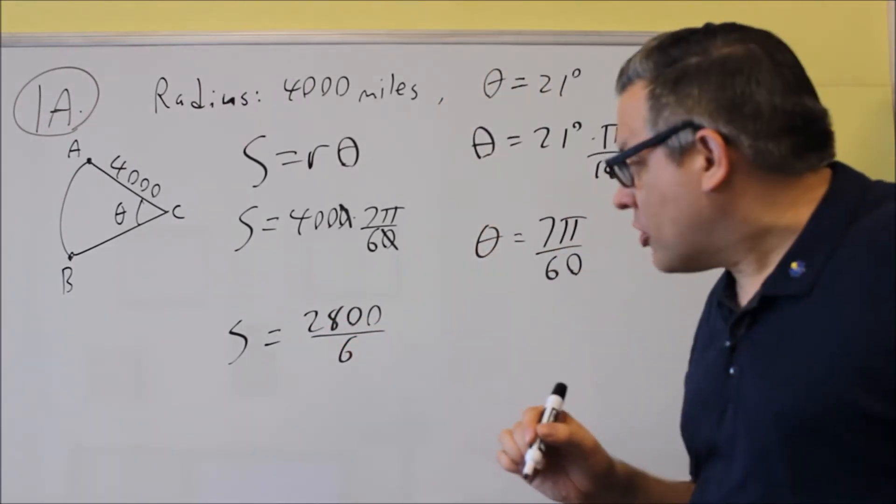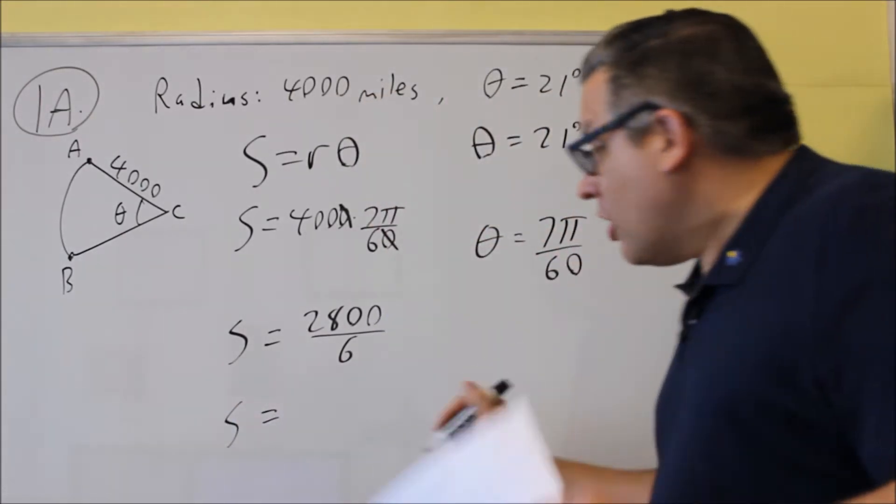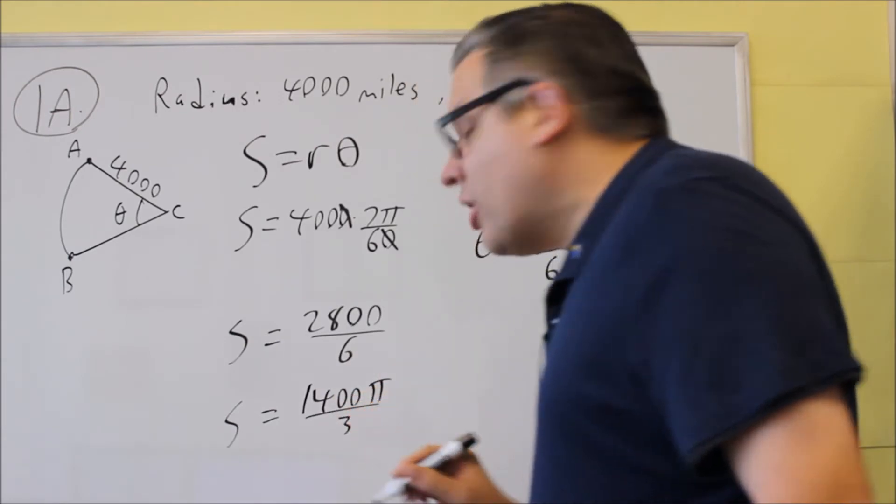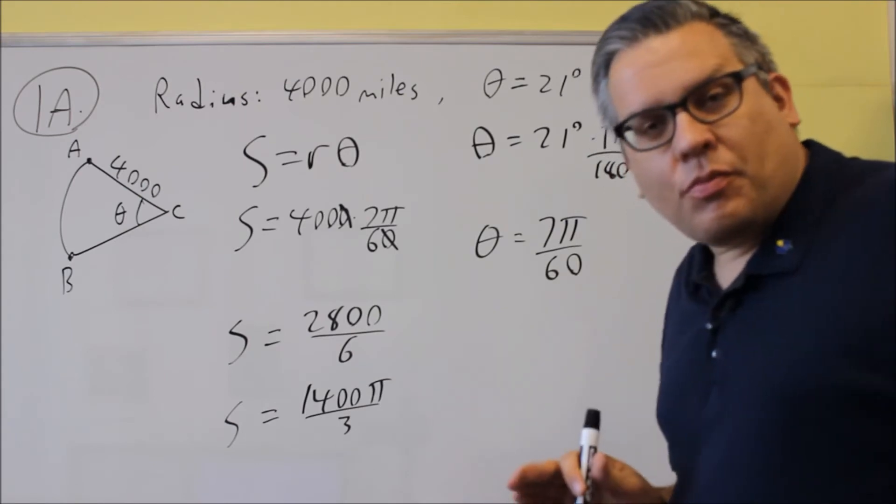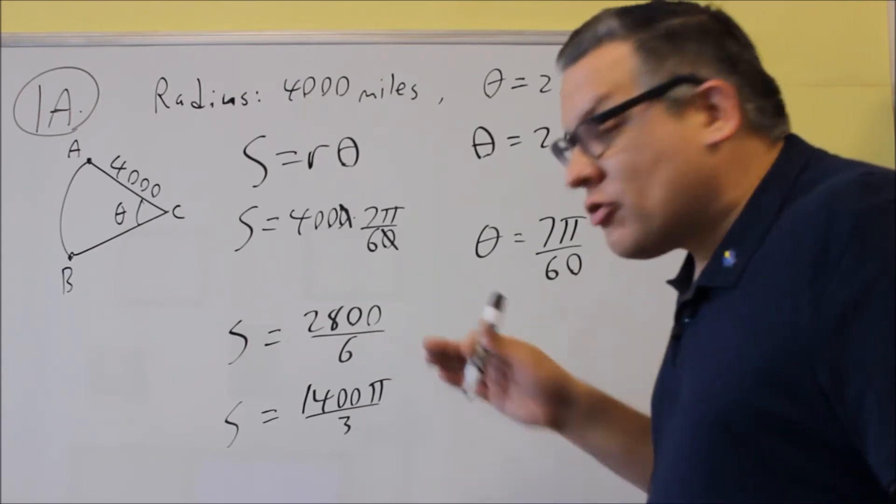You can reduce this one more time. And so if you reduce it one more time, you'll get the answer in the key, which is 1400 pi divided by 3. So this is the first part. What they wanted to do is to find the arc length, and that's what we found.